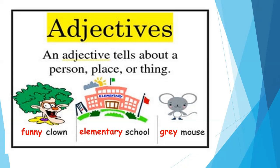For example: funny clown. Clown is a noun and funny is an adjective. The next one is elementary school — school is a noun and elementary is an adjective. Grey mouse — mouse is a noun and grey is an adjective.